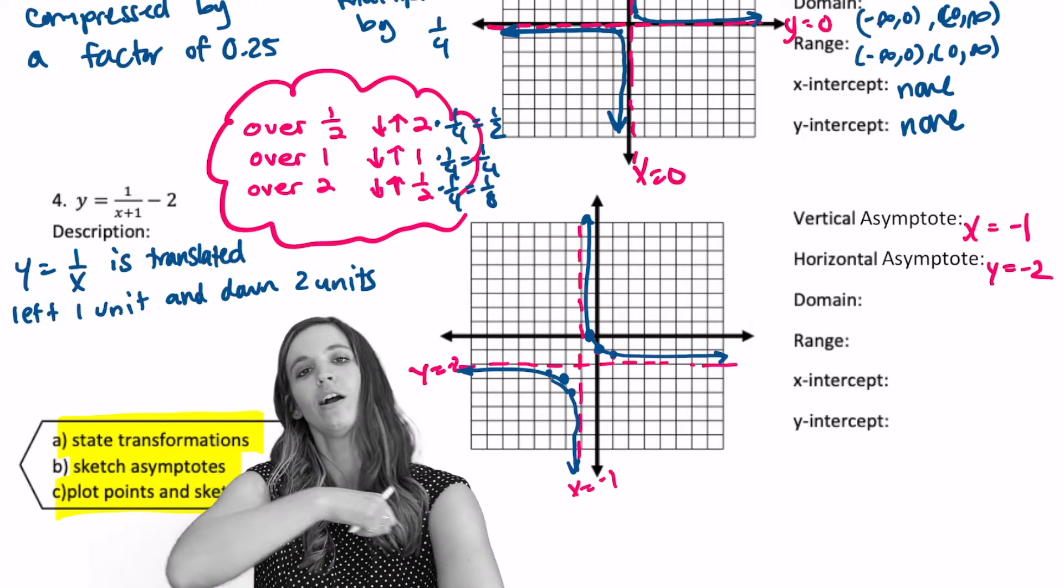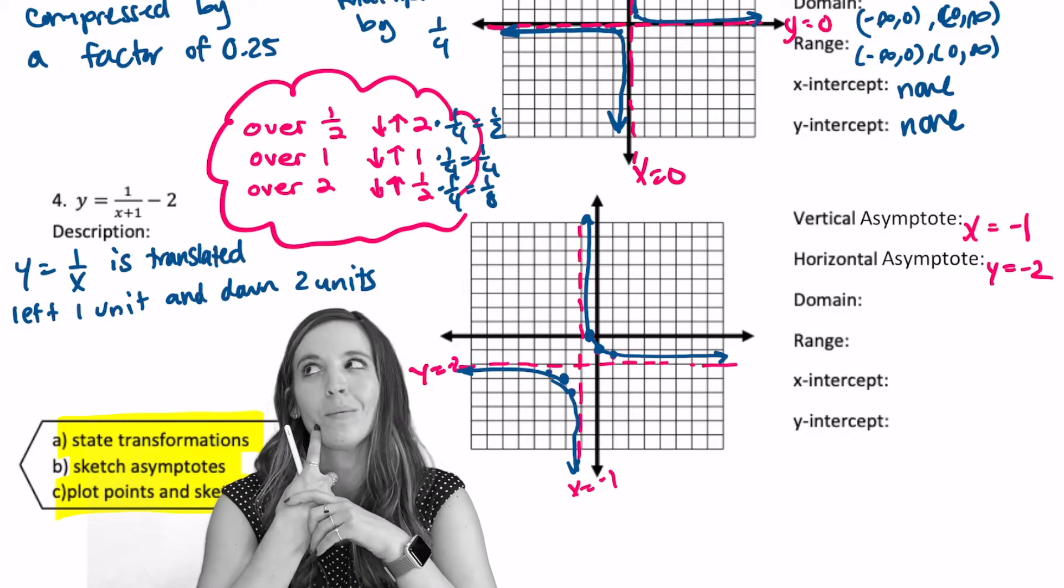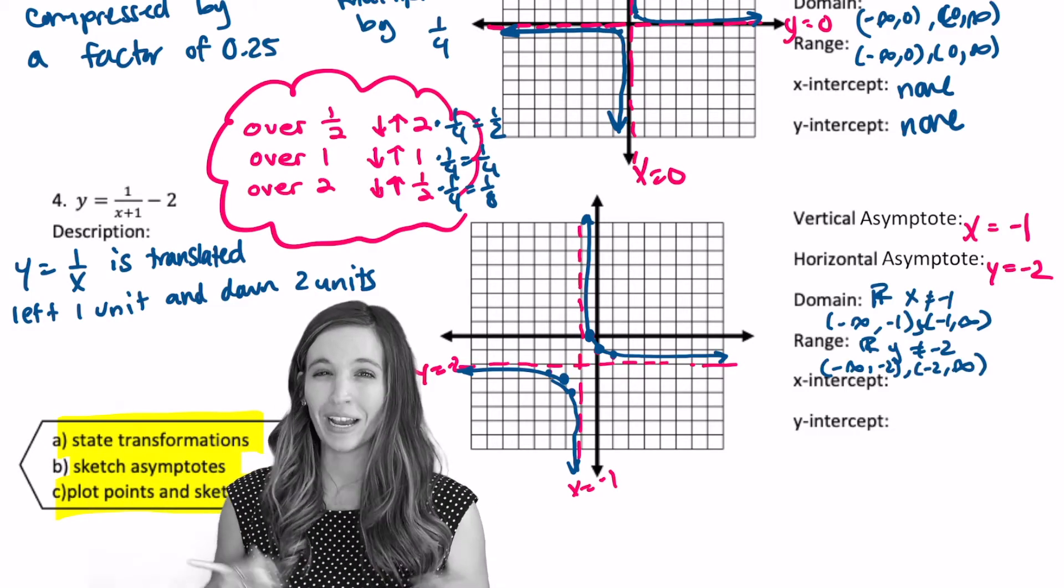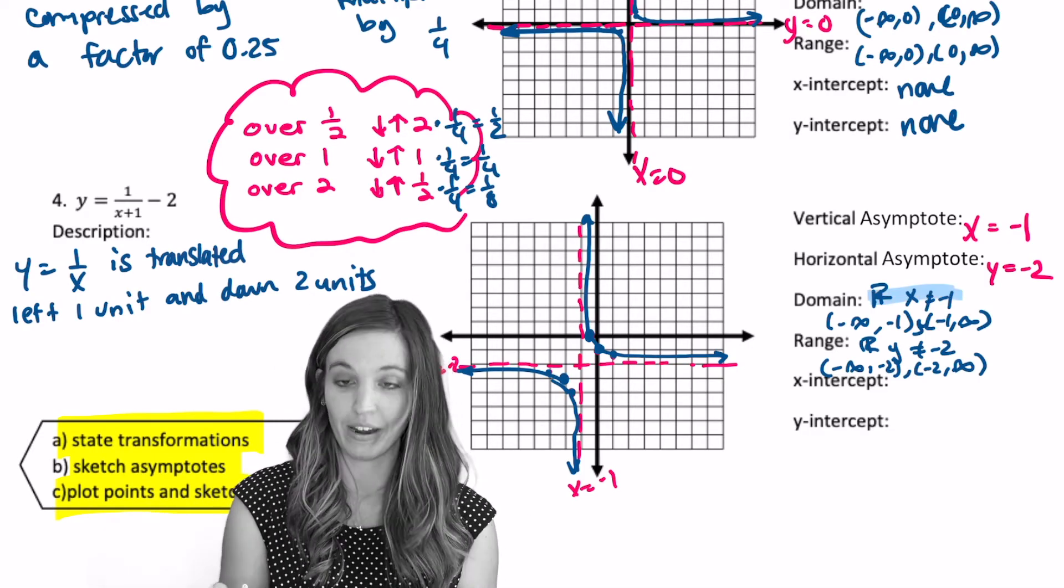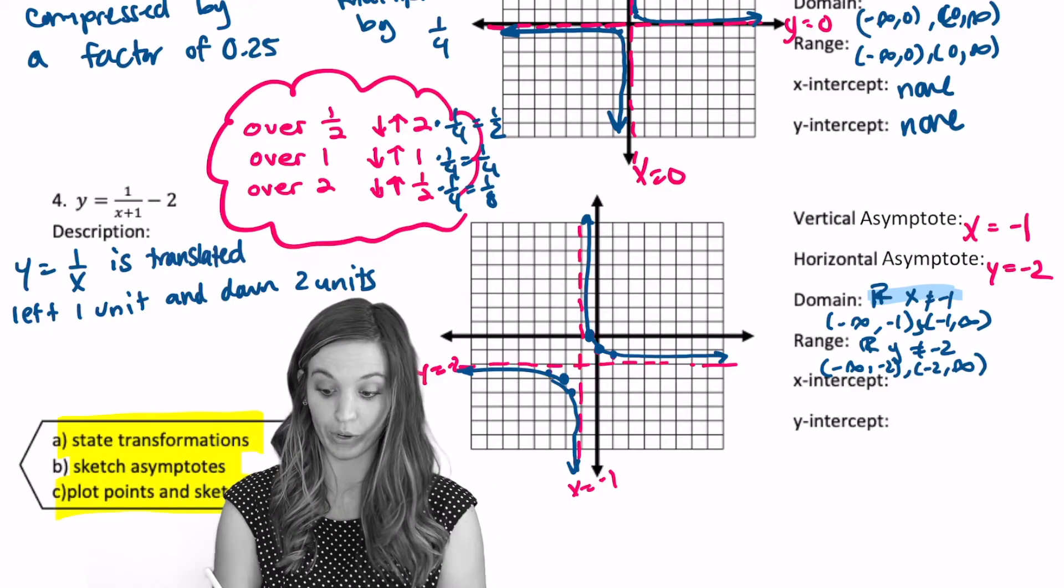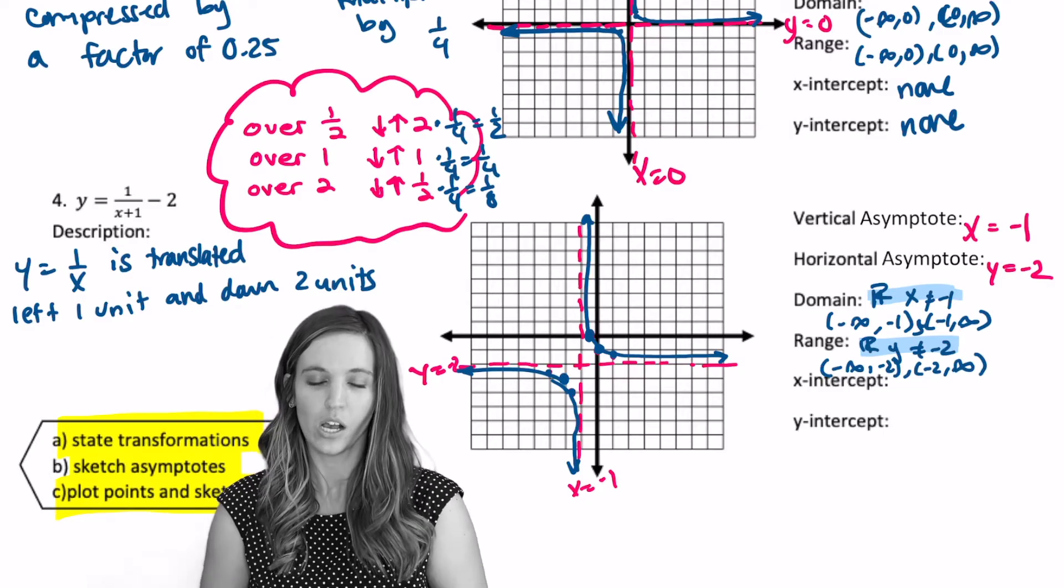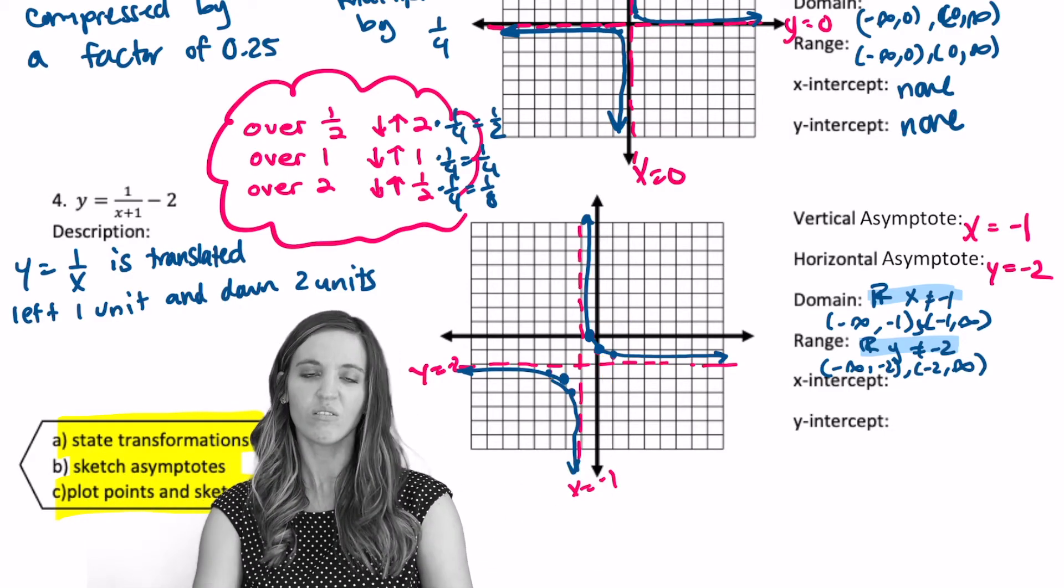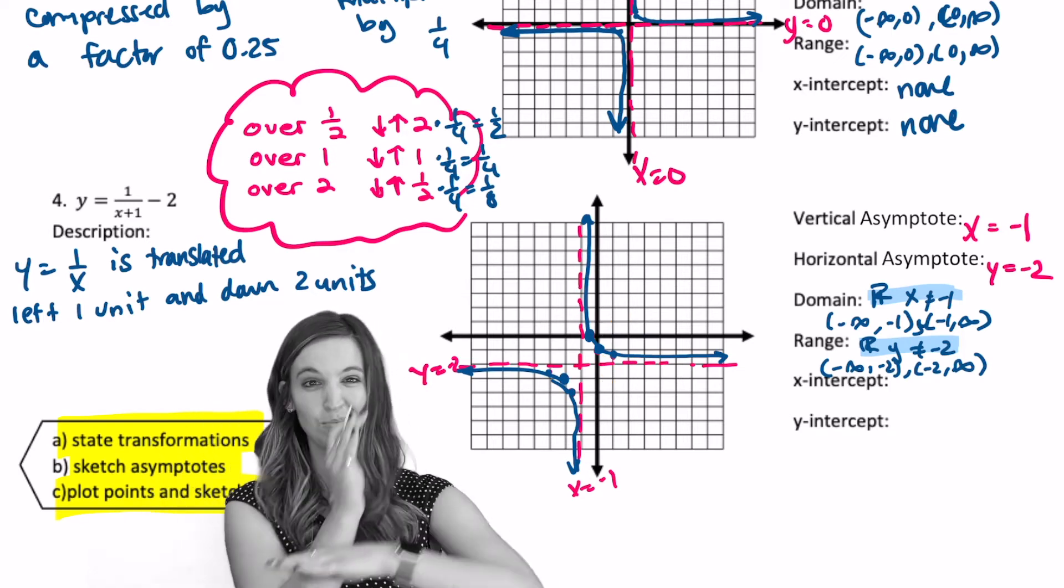Now we've got to go do domain and range. Well, the only place I'm not going to see the graph is at those asymptotes. So it probably would have been smart for me to do those right away once I had my asymptotes. So my domain would just be all reals except for that asymptote at x equals negative 1. So I'm going to exclude that. Range is going to be all reals. y can't equal that asymptote. So y can't equal negative 2. Then, of course, right? x-intercept, y-intercept, none. Oh, wait a minute. We actually have an x and a y-intercept this time because our asymptotes shifted.